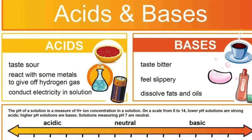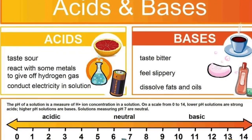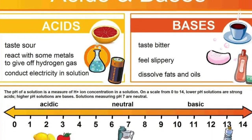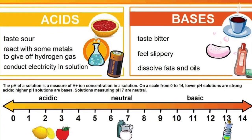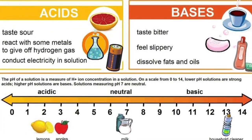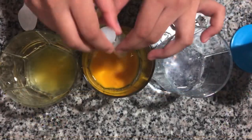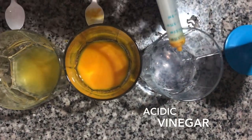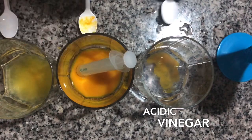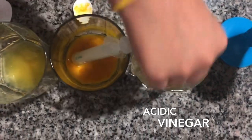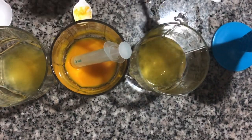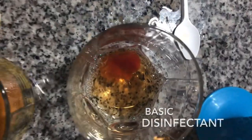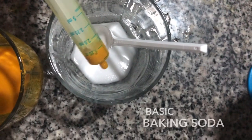The pH of a solution is a measure of hydrogen ion concentration in a solution, on a scale from 0 to 14. Lower pH solutions are strong acids; higher pH solutions are bases. Now that we have seen acids and bases, we know why the color changes sometimes and doesn't change other times. Vinegar is acidic in nature, so there was no color change when the indicator turmeric water was added. Baking soda and disinfectant are basic in nature, and so they changed color when indicator turmeric water was added.